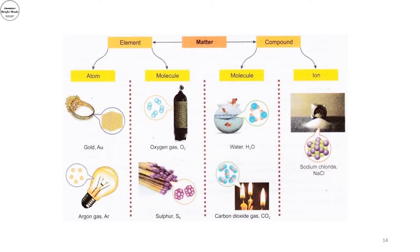Now let's look at the pure matter. It can be classified like we said into elements or compounds. Now if I look at the element it can be first classified into atom or molecule if it is made out of one single atom such as in case of gold or argon.